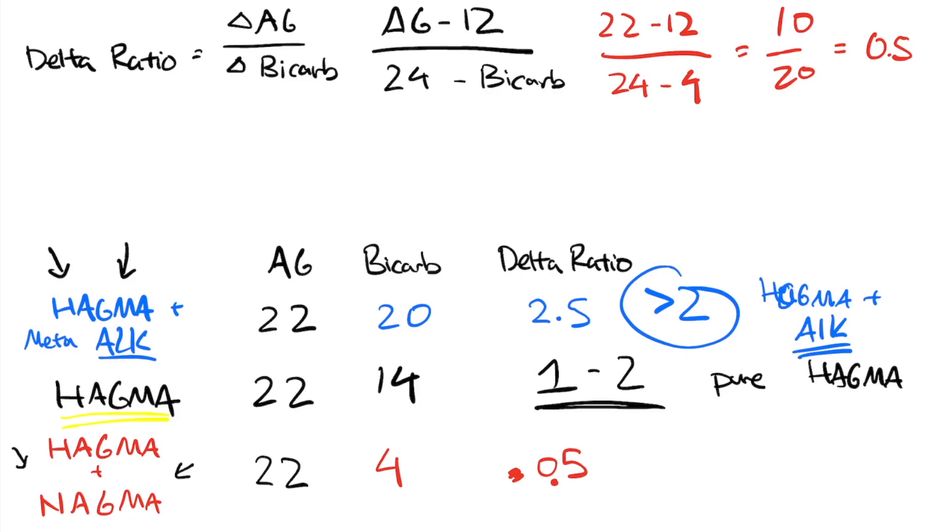And then if you have a value less than 1, that's going to be your HACMA plus your NAGMA.